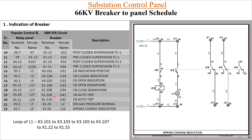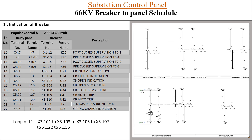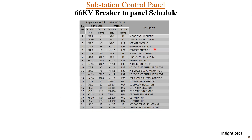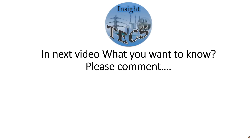This completes the schedule for the indication part of the breaker. The complete schedule covers control plus indication: items 1 to 9 were discussed in part 1 and items up to 22 were covered in today's video. If you have any queries, please ask in the comments below. Keep watching and wait for part 3, and let us know how you like our videos.